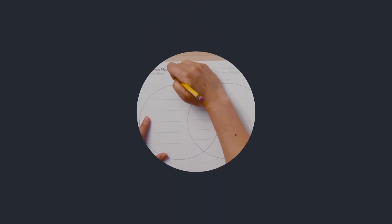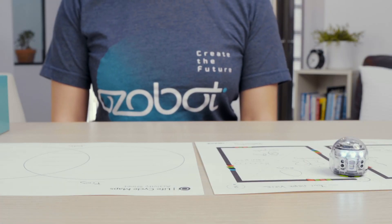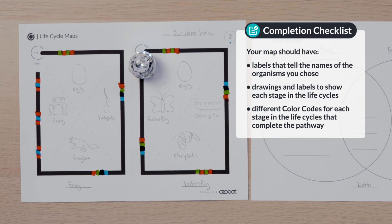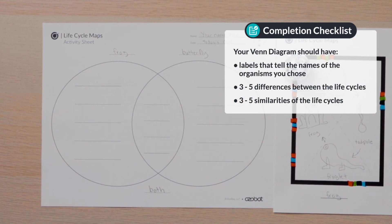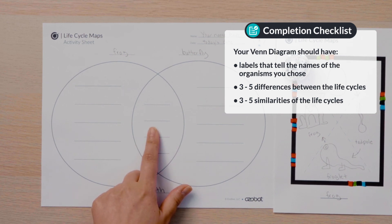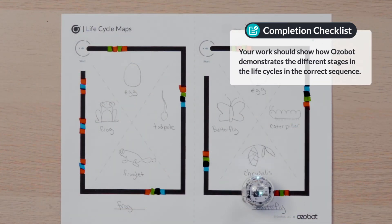Can you label the parts of your Venn diagram and write three to five differences and three to five similarities of the two life cycles you chose? Remember to check your work before you share it with others. Your map should have labels that tell the names of the organisms you chose, drawings and labels to show each stage in the life cycles, and different color codes for each stage in the life cycles that complete the pathway. Your Venn diagram should have labels that tell the names of the organisms you chose, three to five differences between the life cycles, three to five similarities of the life cycles, and your work should show how Ozobot demonstrates the different stages in the life cycles in the correct sequence.